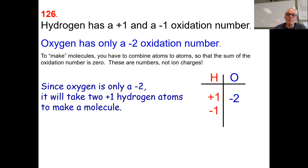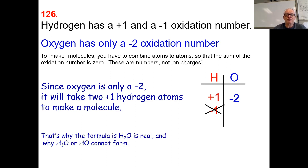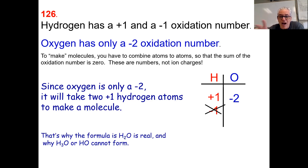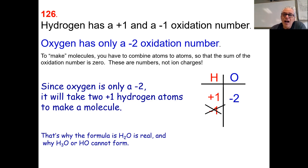The only possible combination is H2O. There's no HO, there's no H3O — no other possible combinations of positives and negatives in simple whole number ratios other than H2O. So we use these oxidation numbers to figure things out like this.